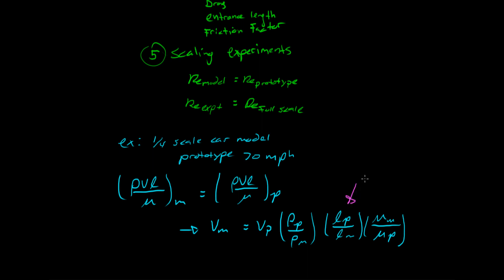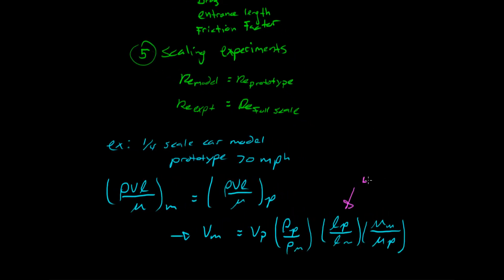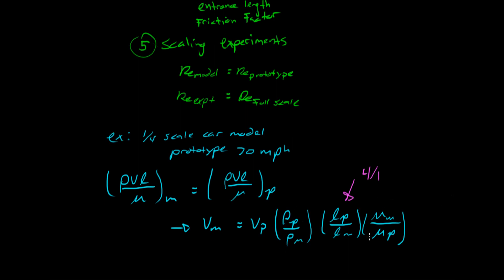Oh my bad, this is four to one. So if we do it in air, the densities and the viscosities stay the same, and so the only thing that changes is this four to one, which means that the velocity in the wind tunnel needs to be 70 miles per hour times four, which is 280 miles per hour. And that's a pretty ridiculous wind tunnel experiment.